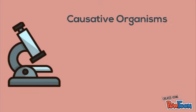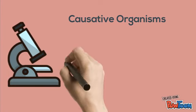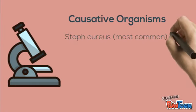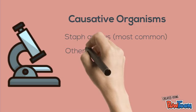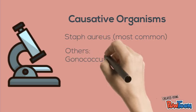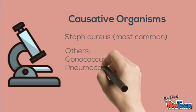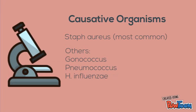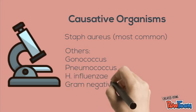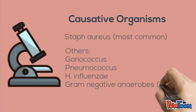The commonest causative agent is Staphylococcus aureus. Other causative agents include gonococcus in adults, pneumococcus, H. influenzae — which used to be the commonest cause in children before the introduction of the vaccine — and gram-negative anaerobes such as E. coli.